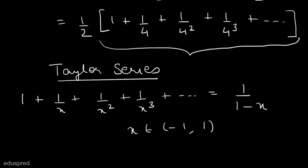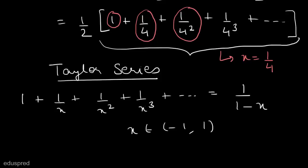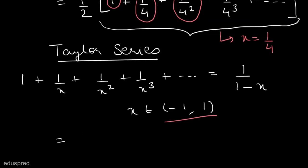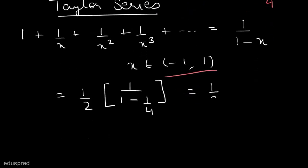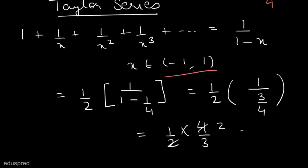In our case, x is equal to 1/4, since 1 = (1/4)⁰, 1/4 = (1/4)¹, 1/4² = (1/4)², and so on. Note that 1/4 is within the valid range. Using the geometric series formula, the bracket term equals 1/(1 - 1/4) = 1/(3/4) = 4/3. So P(S) = 1/2 × 4/3 = 2/3.